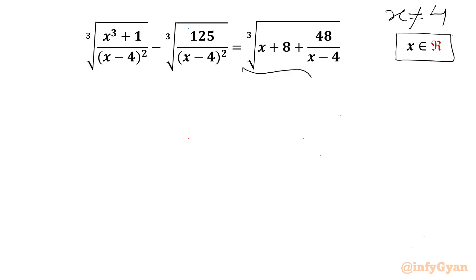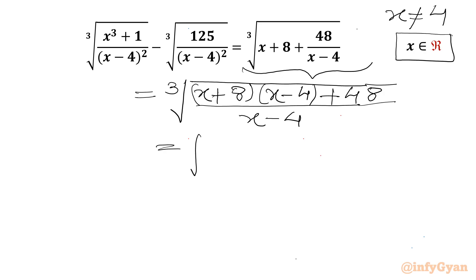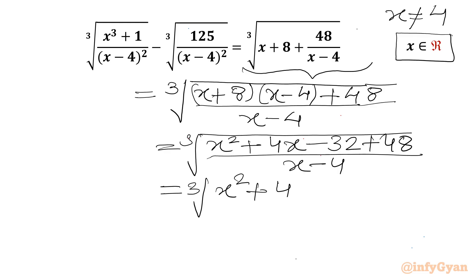Now I will begin with simplifying the RHS. Taking LCM, x minus 4 will be our LCM. So I can write cube root of x plus 8 times x minus 4 plus 48, all over x minus 4. This simplifies to cube root of x squared plus 4x minus 32 plus 48 over x minus 4, which further becomes cube root of x squared plus 4x plus 16 over x minus 4.